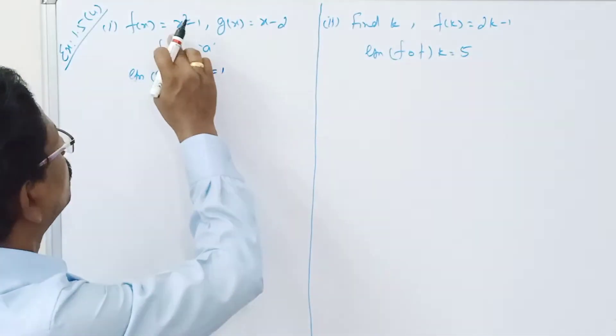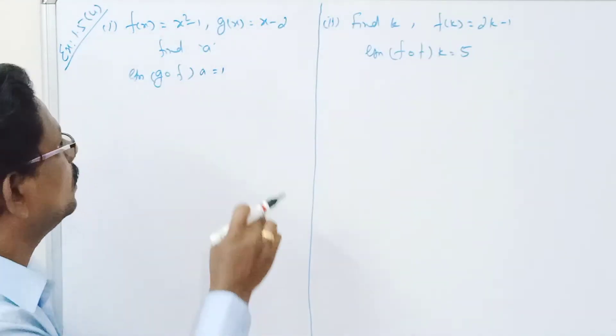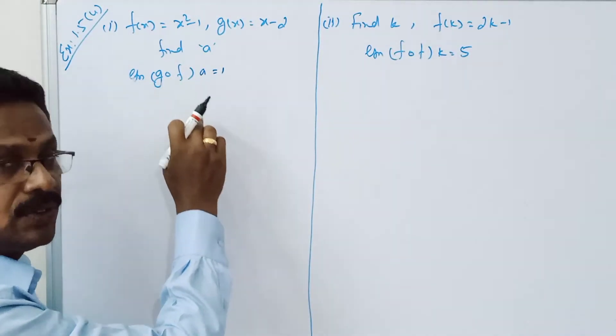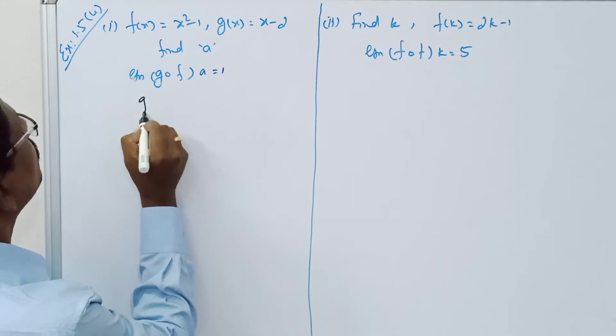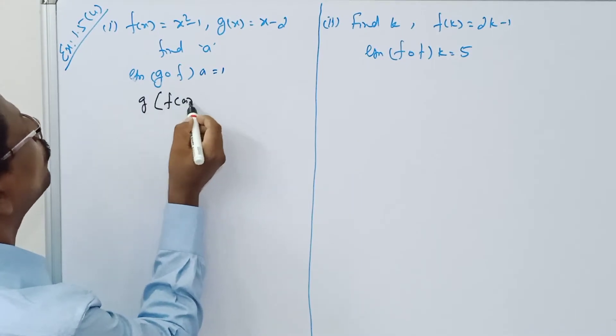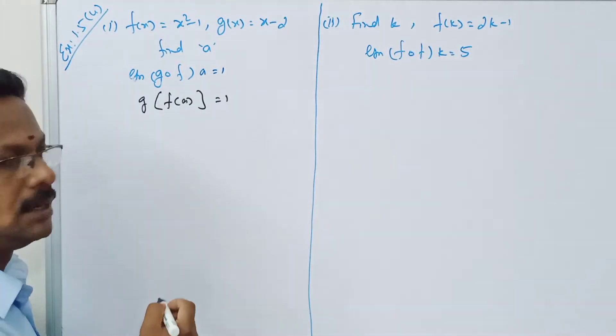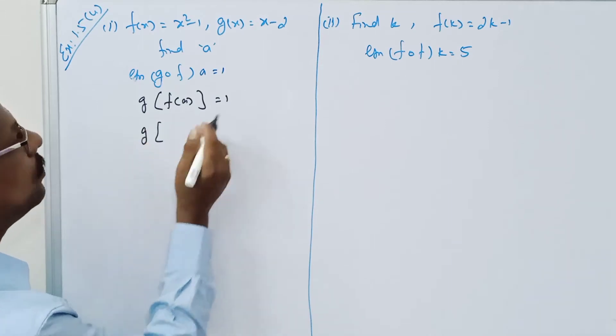Welcome to the premise. Given the composition g of f of a equal to 1, what is the value of a? That is, g of f of a equal to 1.